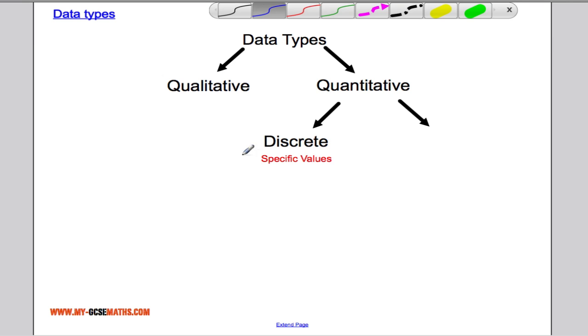So for example, the number of goals a team scores in a football match would be a discrete value. The reason for that is you score one goal or two goals or three goals or zero goals. That takes a specific value, so it's a discrete data type.